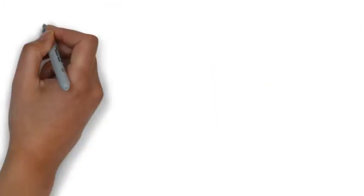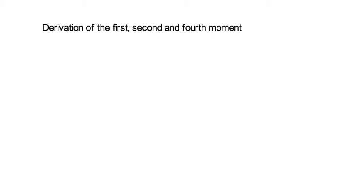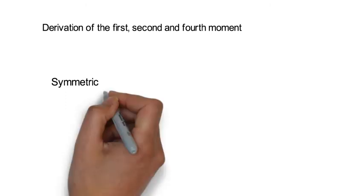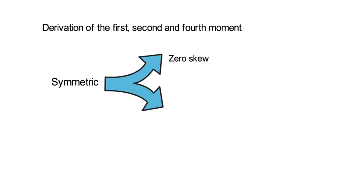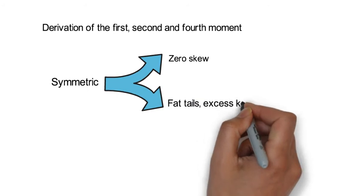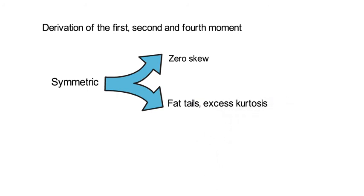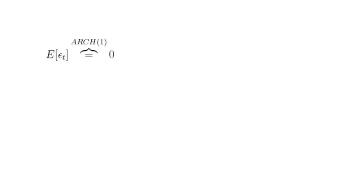Now let's turn to our second objective: the derivation of the first, second and fourth moment. Note the ARCH1 model is symmetric and therefore comes with zero skewness. But as we will see shortly, an ARCH1 can account for fat tails or excess kurtosis. I want to show you that the first moment of an ARCH1 random variable is zero, and that the variance equals alpha_0 divided by 1 minus alpha_1.